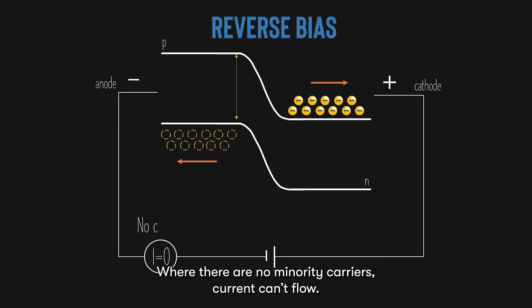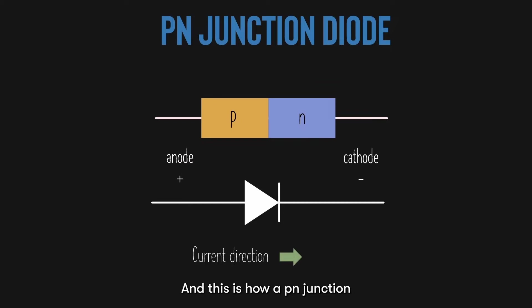When there are no minority carriers, current cannot flow. And this is how a PN junction limits current to flow in only one direction. This property has a very useful application in solar cells, which we will learn in the upcoming chapters.